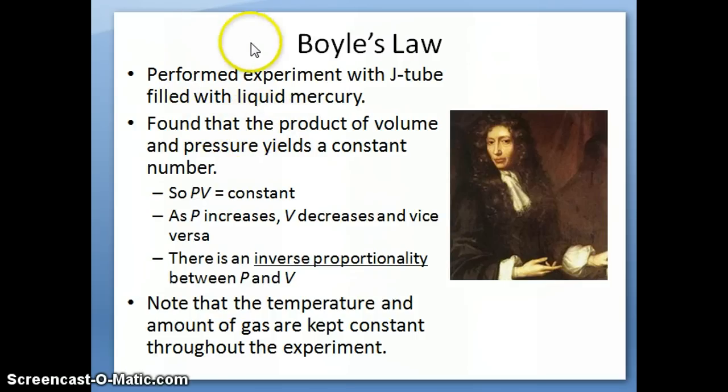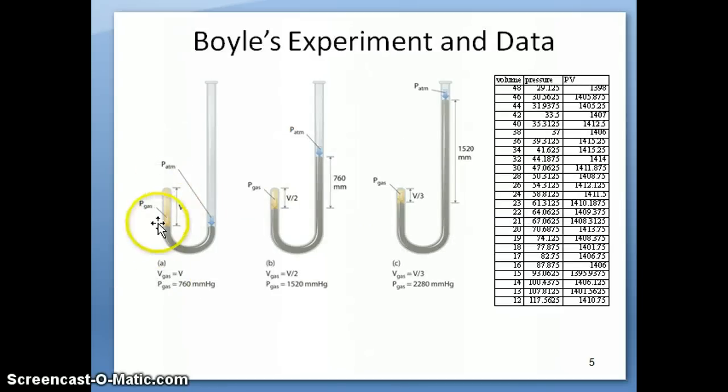We're going to start here with Boyle's Law. Boyle, if you remember from Chapter 2 when we talked about the history of the atomic theory, he was basically what we often called the first modern chemist because he insisted on using experimental data to back up hypothesis and theory. His contribution in terms of the gas law is something called Boyle's Law. He performed experiments with something called a J-tube. This is basically a tube, it's called a J-tube for obvious reason, it's shaped like the letter J.